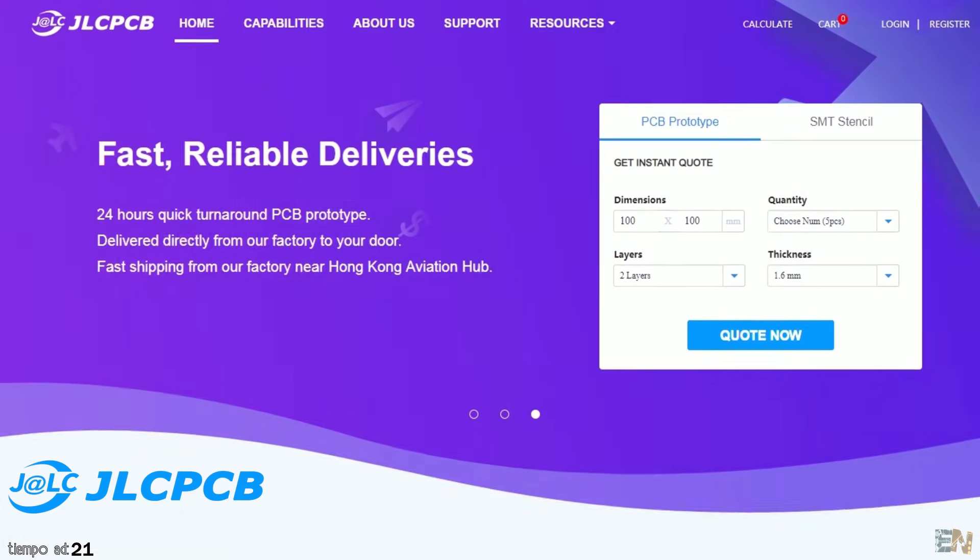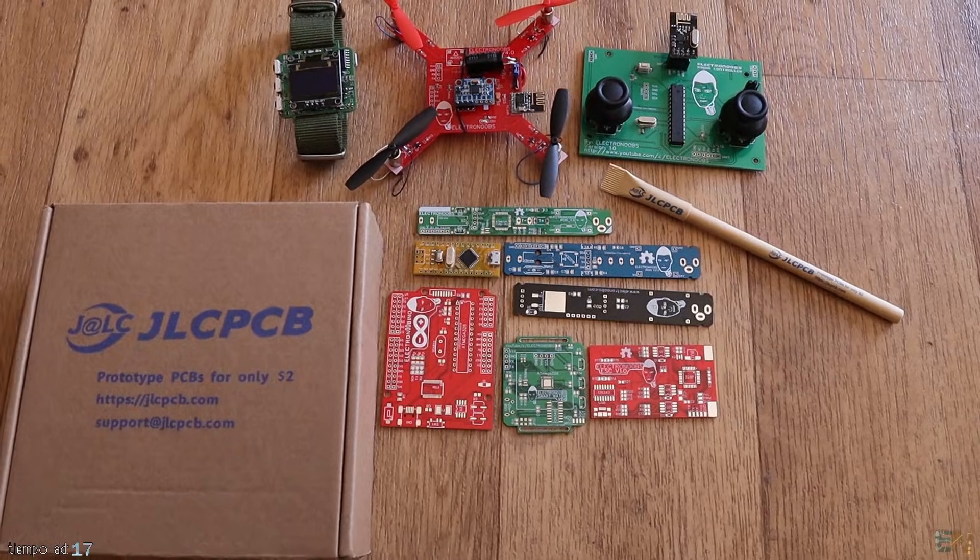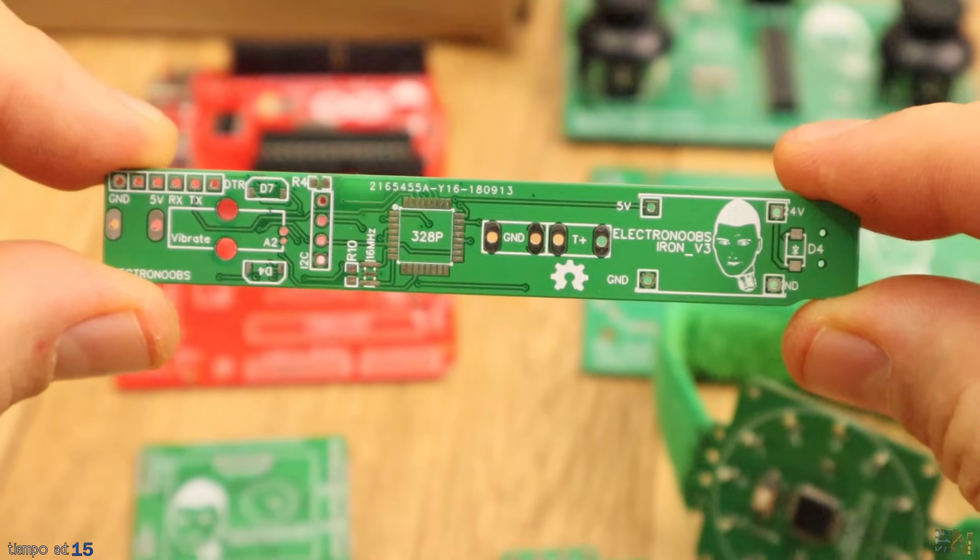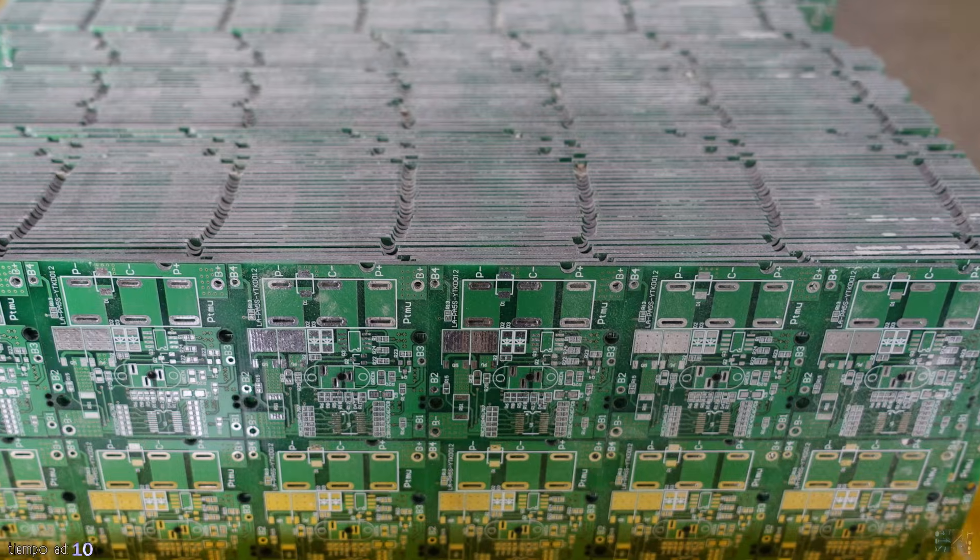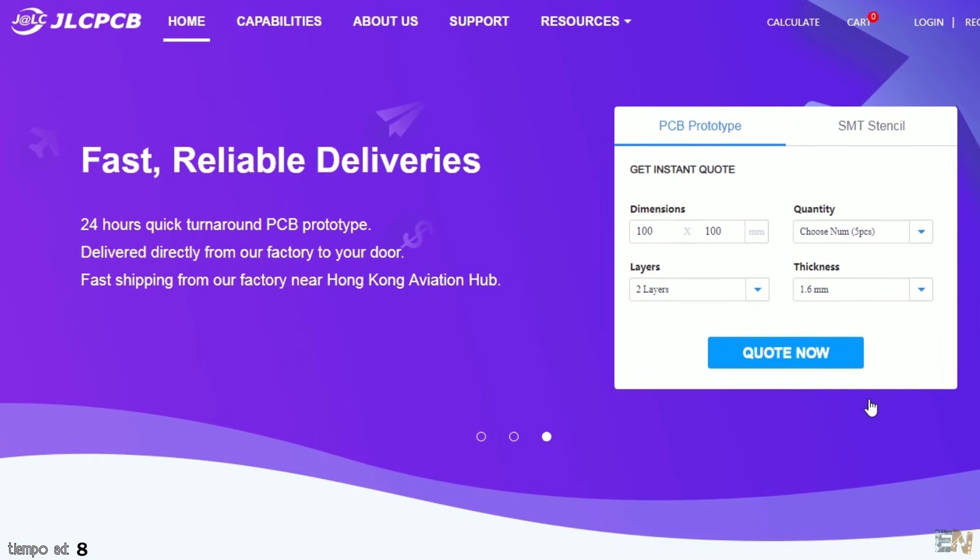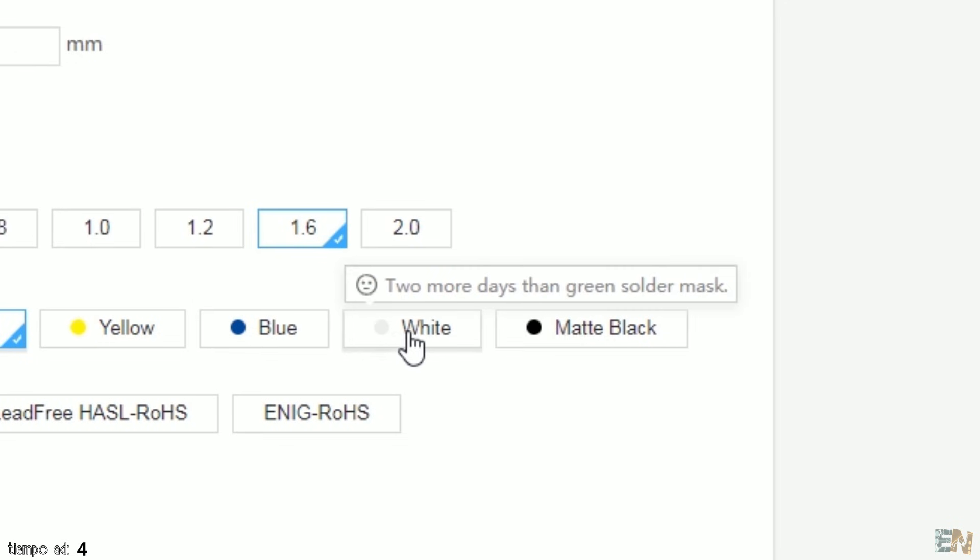The sponsor of this video is JLCPCB. Thanks to all user feedback, they are improving their services every day. Ordering PCBs is very easy - all you have to do is upload the Gerber files to JLCPCB.com, select the settings you want, and you could get 5 PCBs of any color for only $2.